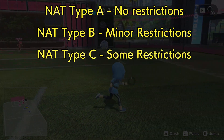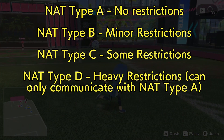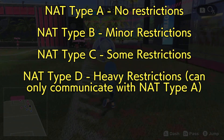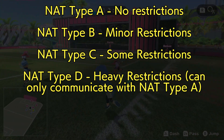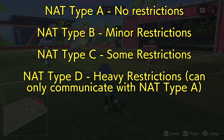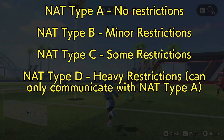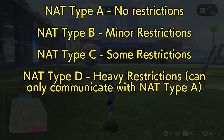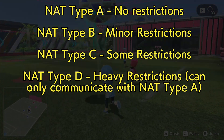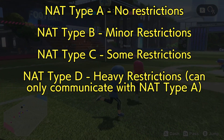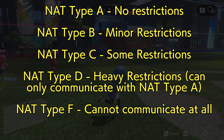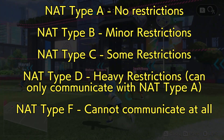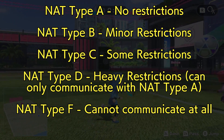NAT Type C and D have heavy restrictions, and as I said, in my case I had NAT Type D, so I could only get bot matches and a few human matches with players who had NAT Type A, but nothing else. And then there is also NAT Type F, where you can't communicate with other players at all.